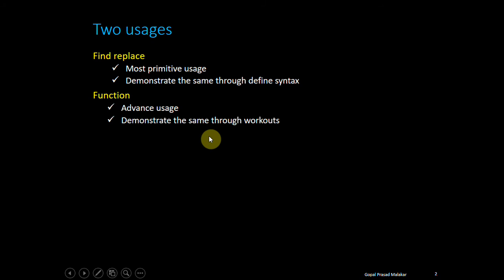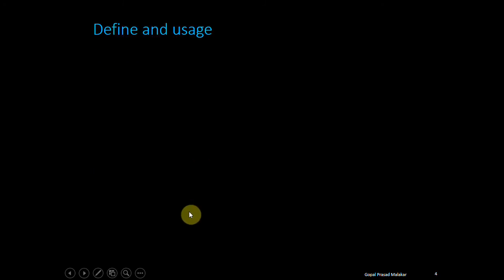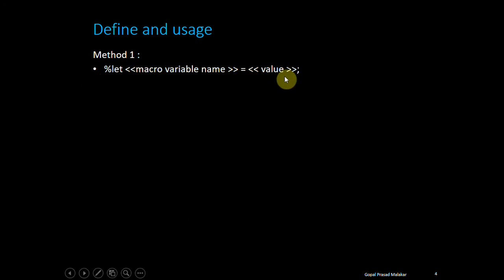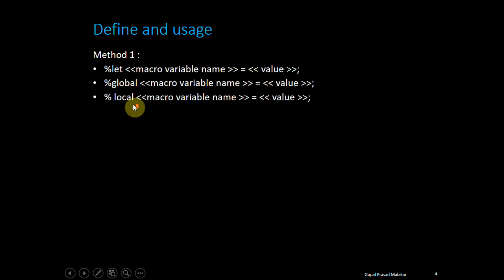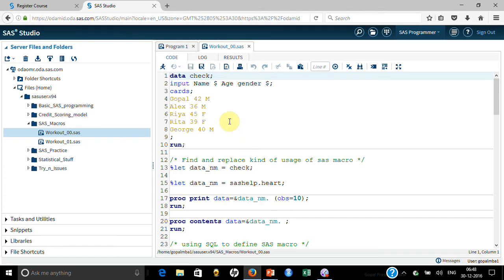Now let me explain how you define a SAS macro and how you decode it. There are multiple ways of defining and I'll show you some of them. Let me show you method one: using %let, you define the macro variable name and the value. There are other syntaxes also like %global or %local — global affects everywhere and local just inside the function. Whenever you want to use a SAS macro you put an ampersand sign and the macro variable name and it gets decoded.